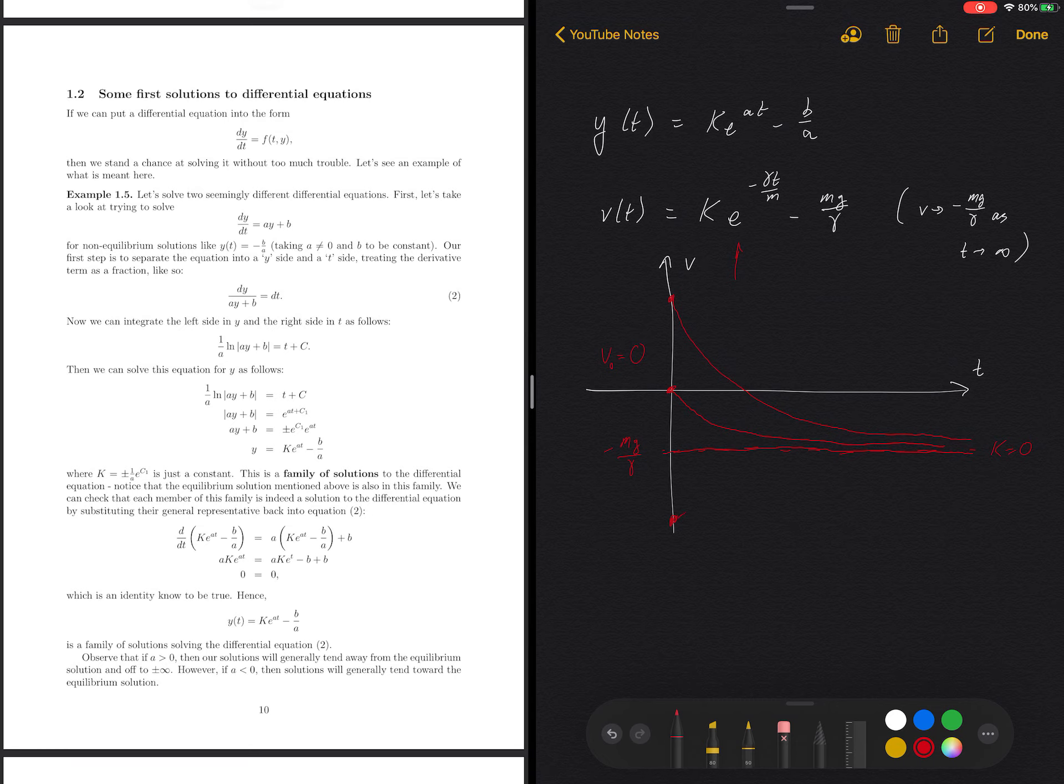it too will exponentially decay toward this equilibrium solution. And perhaps even more surprisingly, if we start off by throwing this baseball downward, then there is enough drag force to actually slow the object down. And that actually brings our solution up to the equilibrium as opposed to pulling it down. And we'll notice here that there's a point when we throw the ball up in the air that it stops and then turns around. So that would be the point where velocity is zero.